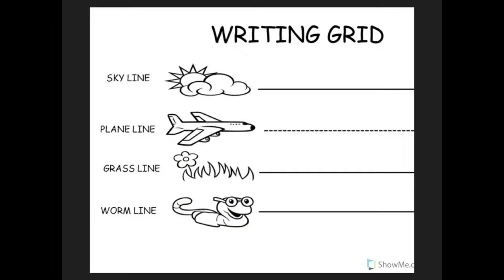Let's start with the alphabet. What's the first letter of the alphabet? A. A is a plain line round letter. Put your pencil on the plain line, fly backwards, curve to the grass line, back up to the plain line, and pull straight down.